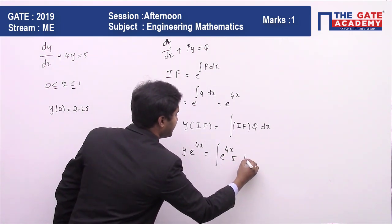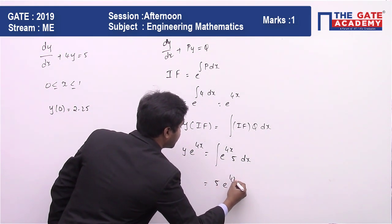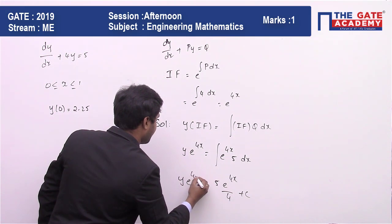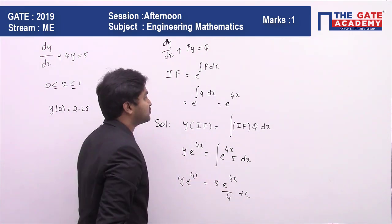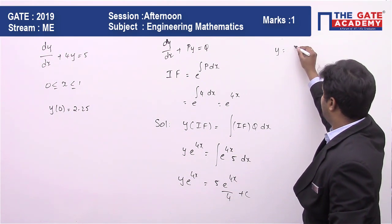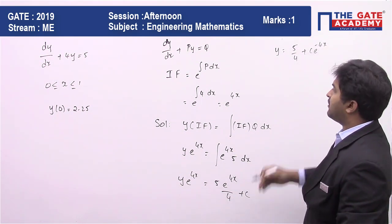Therefore you are going to have 5e^(4x)/4 + c. y into e^(4x) - let me take e^(4x) to the other side. Then y will be equal to 5/4 + ce^(-4x).